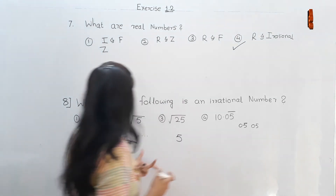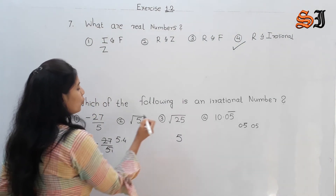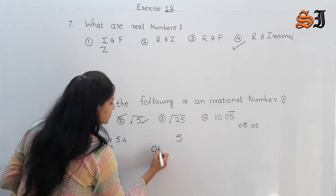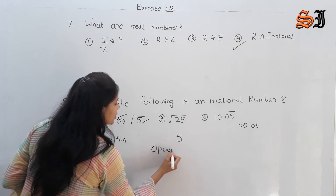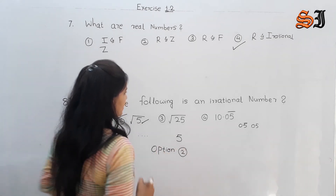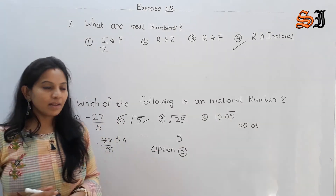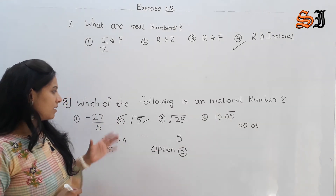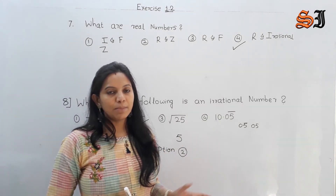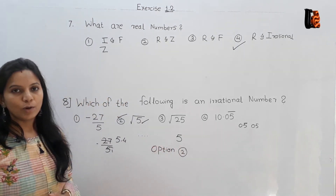Root 5 is non-terminating and non-recurring. So option 2 — root 5 — is the correct answer for which number is irrational.